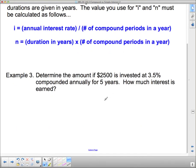So determine the amount if $25,000 is invested at 3.5% compounded annually for five years. How much interest is earned? So here's what we're going to do. We're going to put down our APIN down the side. A-P-I-N. And we have to figure out what we're looking for here. So what are the most important things here? We've got $2,500, we've got 3.5%, and we have five years.